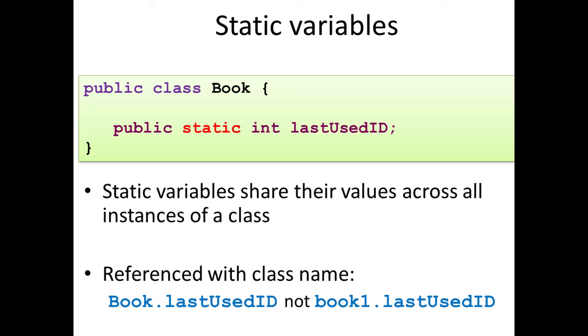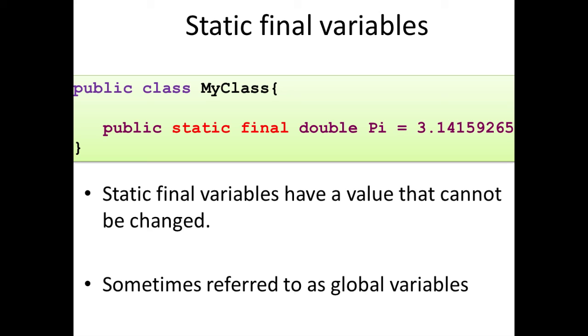One final use of the keyword static is to create the equivalent of constants in Java. Constants are variables that have a defined value at design time and that value can never change. We do this in Java by adding the keyword final to our variable declaration. For example, if we needed to declare a variable equal to the mathematical value of pi, which is shown on screen here, we would use the phrase public static final and then the rest of our standard variable declaration.